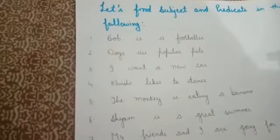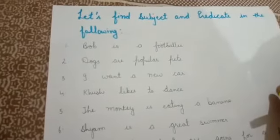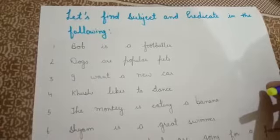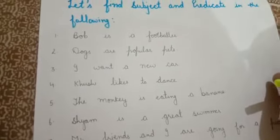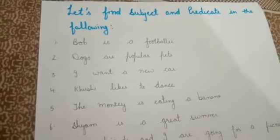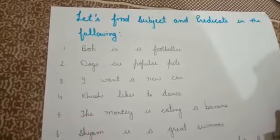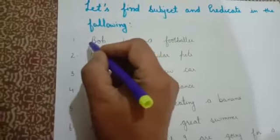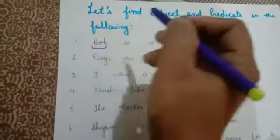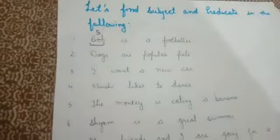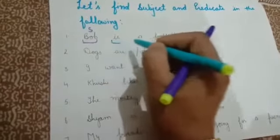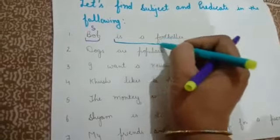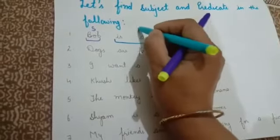Here are a few sentences in which we have to find the subject and predicate. First: 'Bob is a footballer.' Here the sentence is talking about Bob. So Bob is the subject, and 'is a footballer' is the predicate.